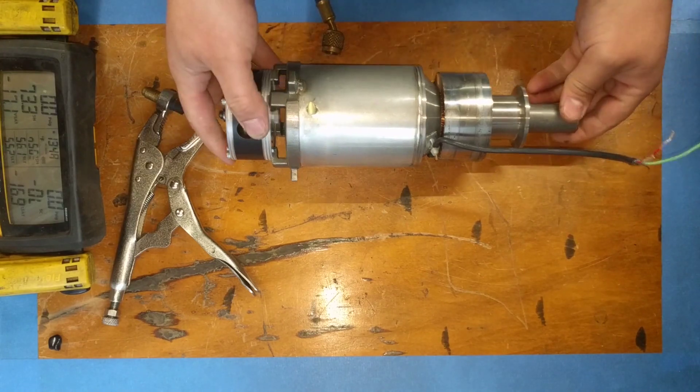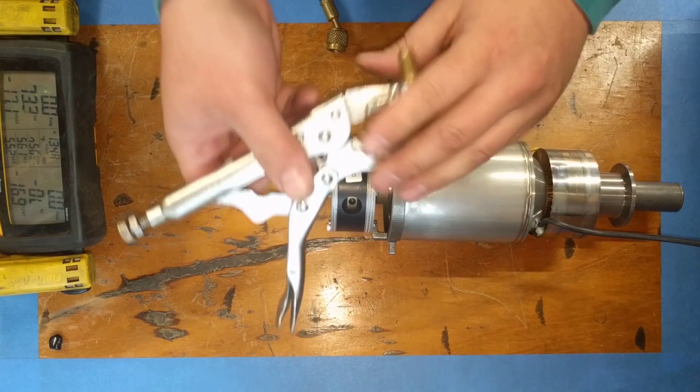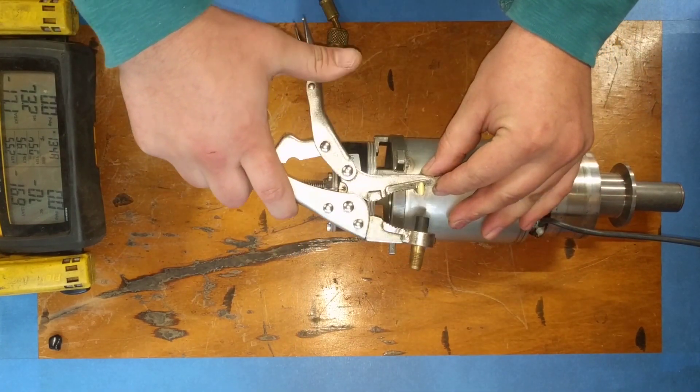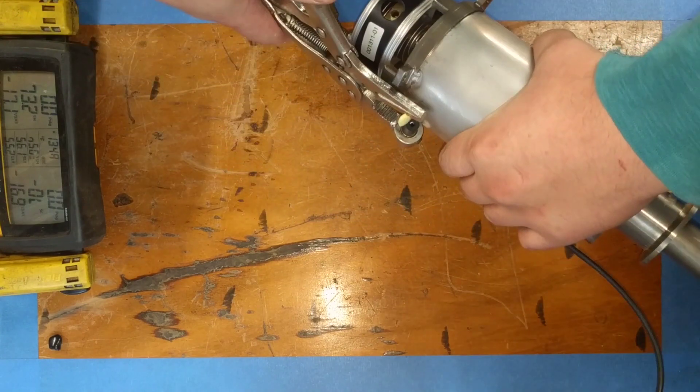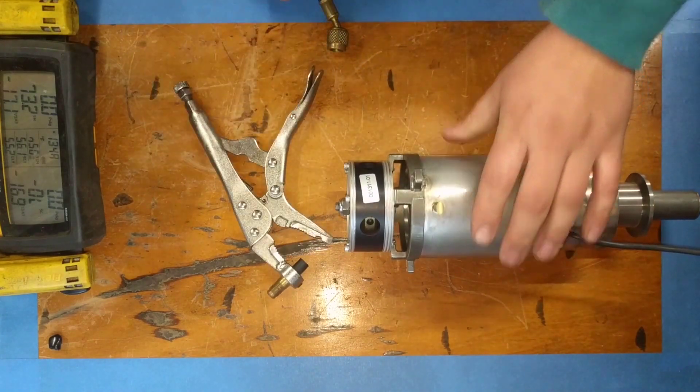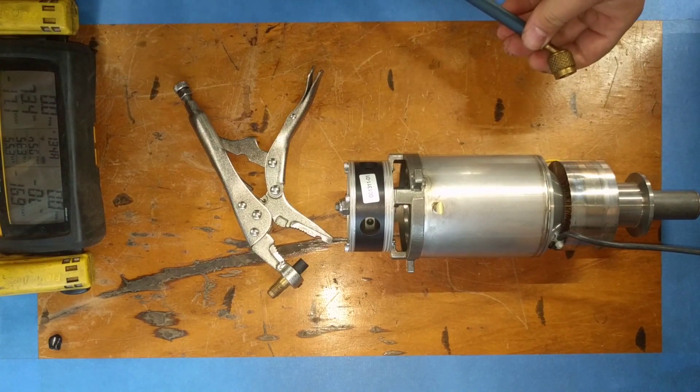We're going to use a Yellow Jacket line tapping tool to see what the pressure is. Considering this is a noble gas, just helium, there's no use in trying to recover it. It would be impossible.